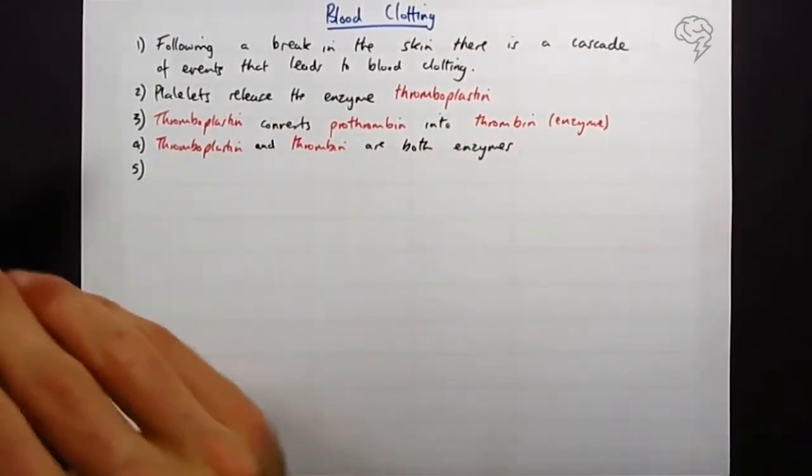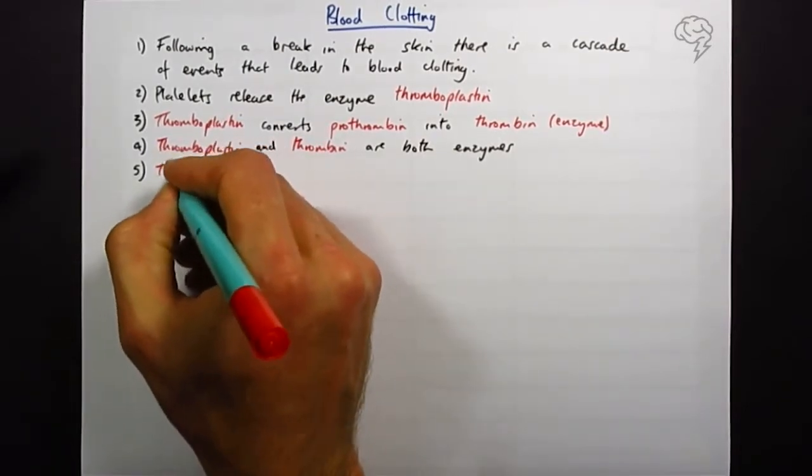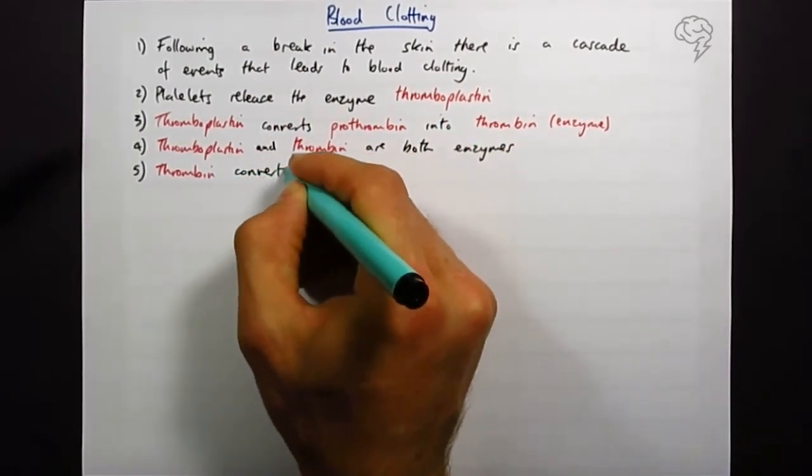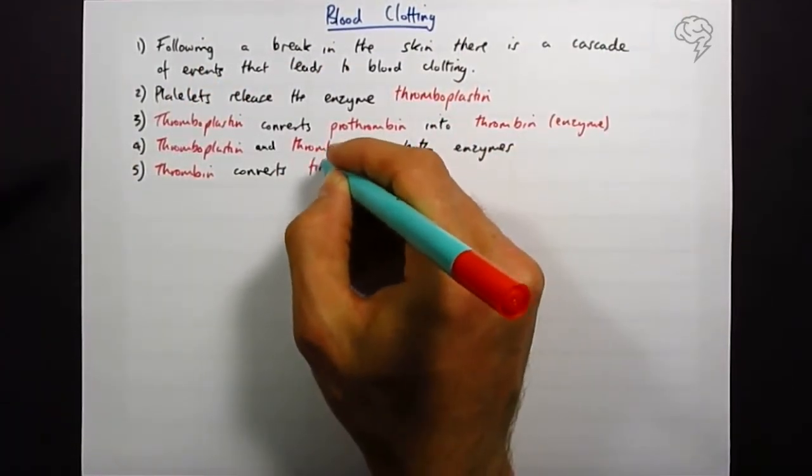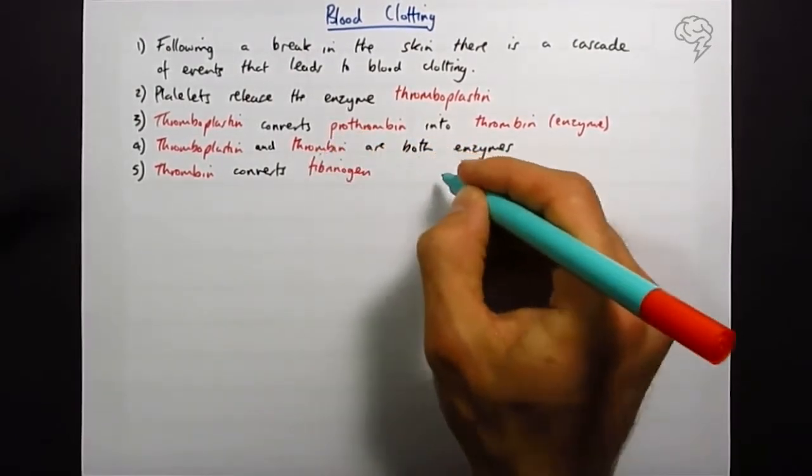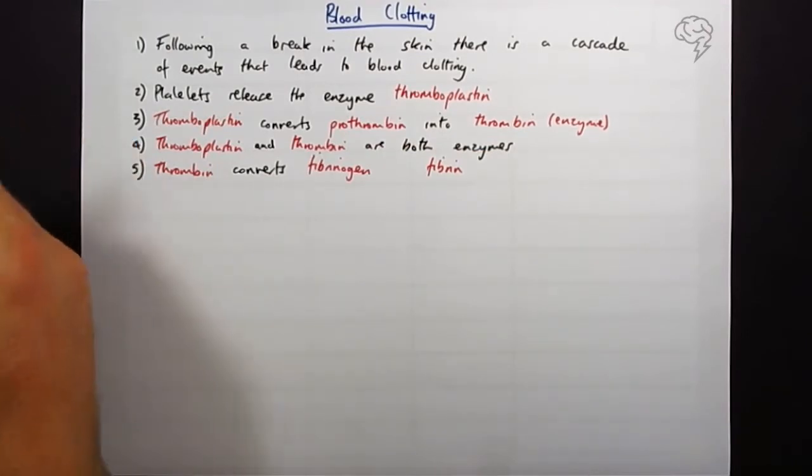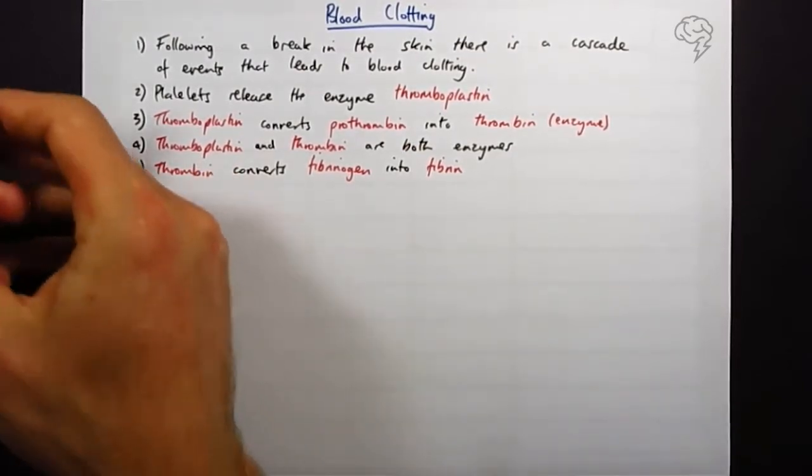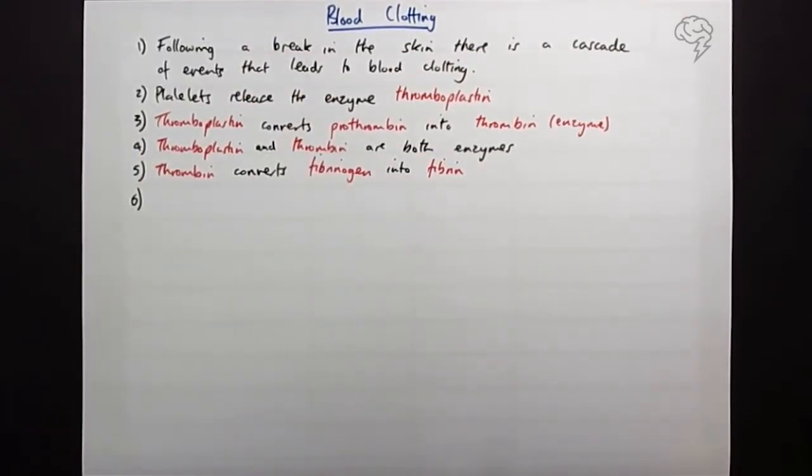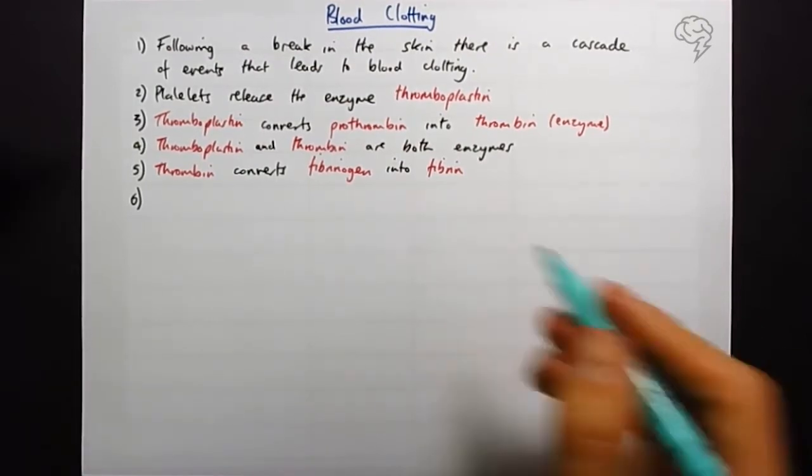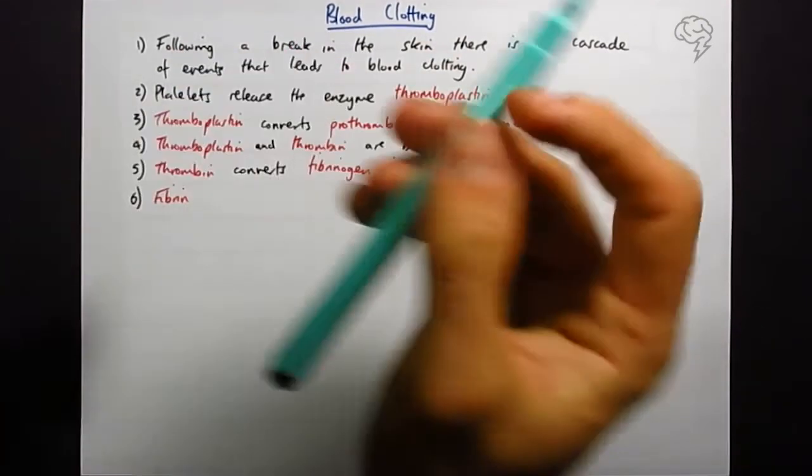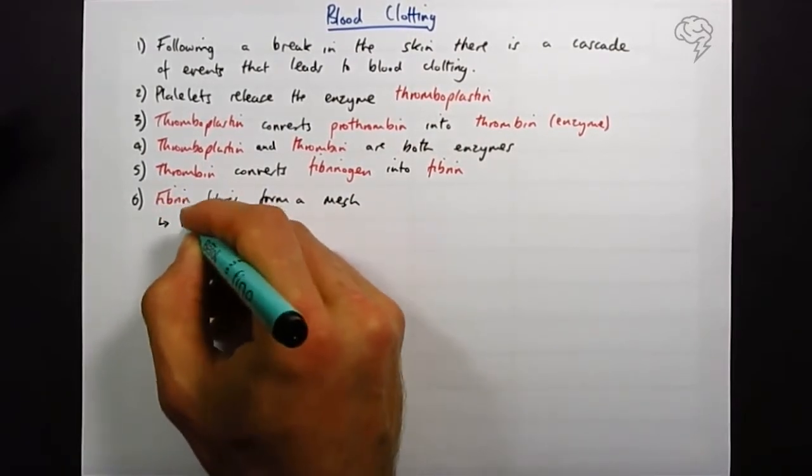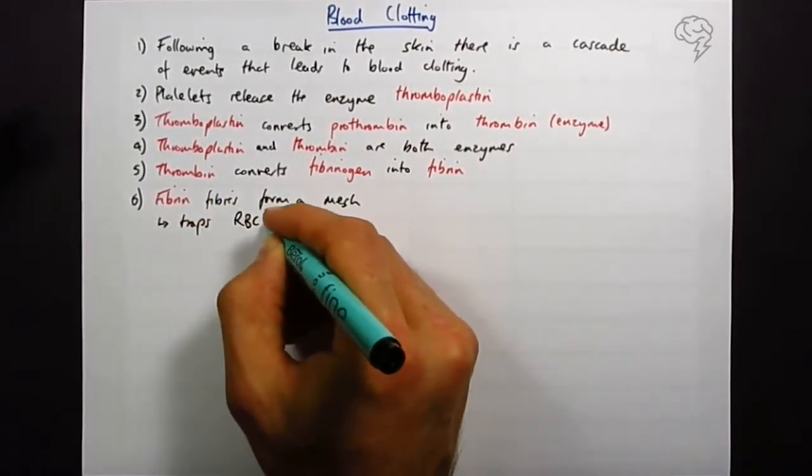Thrombin converts fibrinogen into fibrin, or catalyzes the reaction. So fibrin fibers form a mesh that traps red blood cells and platelets to form a blood clot. RBCs - red blood cells.